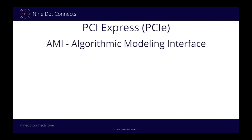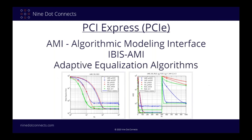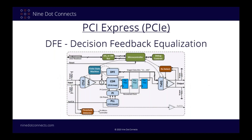AMI stands for Algorithmic Modeling Interface and is more properly called IBIS-AMI, since it is an extension of the IBIS standard added in 2007. AMI essentially lets you model adaptive equalization algorithms during simulation to help you figure out the parameters needed to ensure proper system operation. So what is an adaptive equalization algorithm and why do we need it? To put it perhaps too simply, adaptive equalization is a digital signal processing technique that we can use to clean up noisy serial communication channels, essentially removing edge overlap and noise issues and opening up the eye.